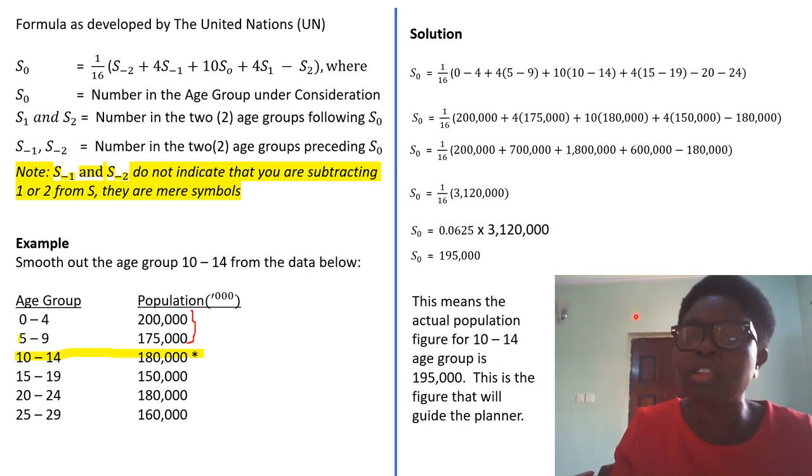What this implies is that the actual population figure for this is 195,000 and not 180,000, which means there are some that didn't really know their ages. But with this formula, the actual population figure that the planner should use, that will guide the planner, is 195,000 and not 180,000 as stated in the population census.